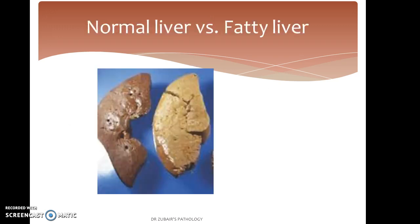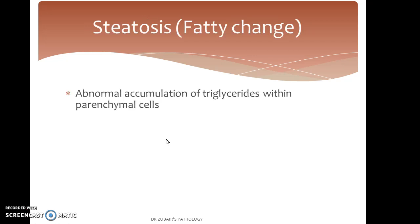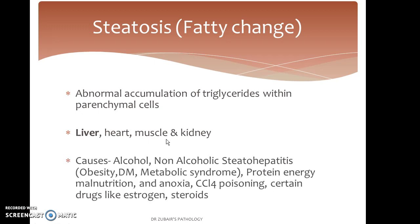This is a very good image comparing the normal liver with the fatty liver. What we observe is that when there is a fatty change in the liver, it appears greasy and the capsule appears tense. Fatty change is also called steatosis. It is the abnormal accumulation of triglycerides within parenchymal cells, affecting most commonly the liver, but also seen in the heart, muscle, and kidney.